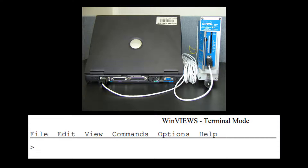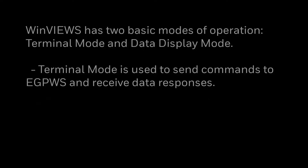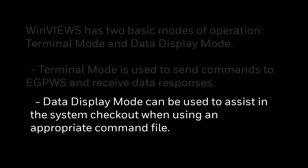Once communication is established between the eGPWS and the PC, a prompt appears in Winview's as shown here. Winview's has two basic modes of operation: terminal mode and data display mode. Terminal mode is used to send commands to the eGPWS and receive data responses. Data display mode can be used to assist in system checkout when using an appropriate command file.